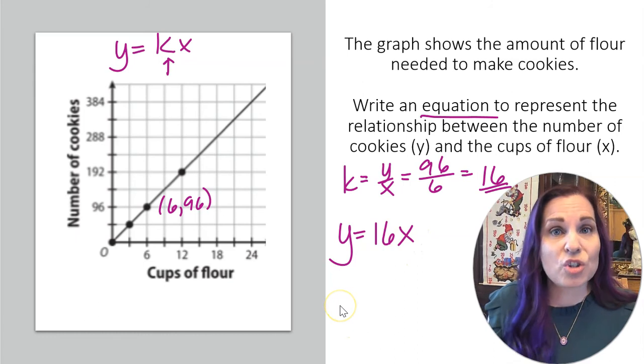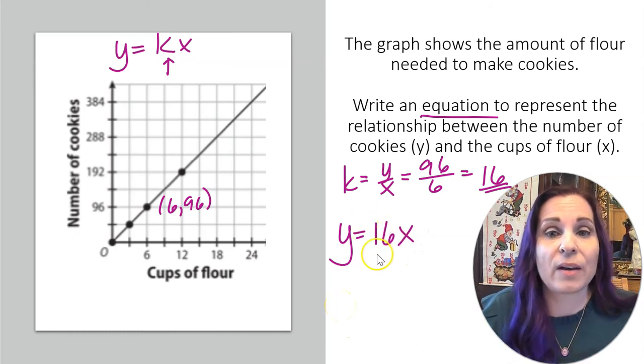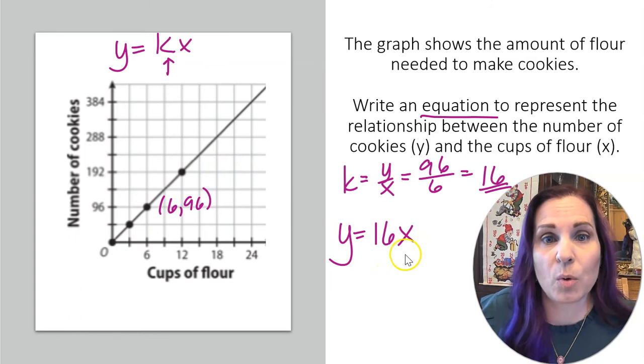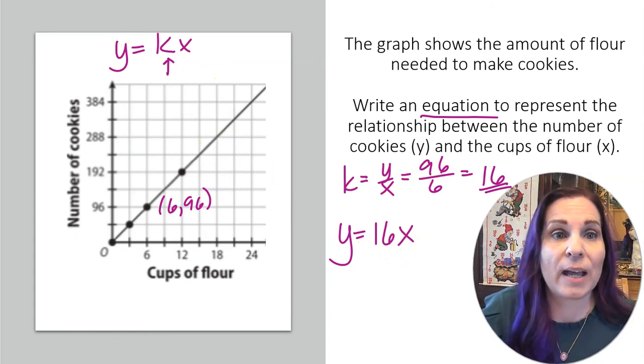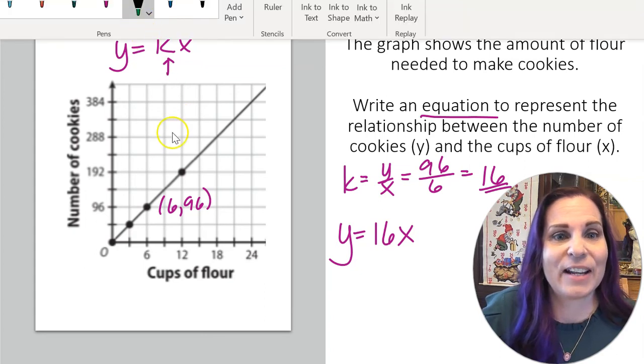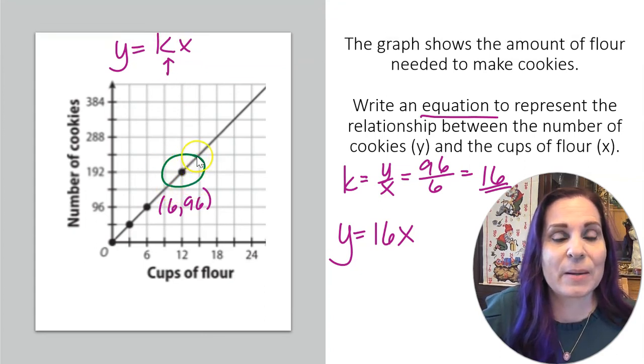And you can check this to make sure that all of the points that you see on the line actually work. So if we look at this point, for example. If we look at this point, this point is 12, 192. Again, follow it down to get the x. Follow it over to get the y.